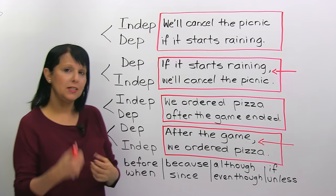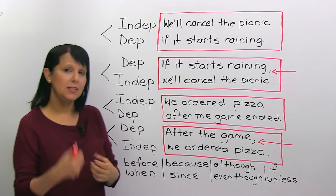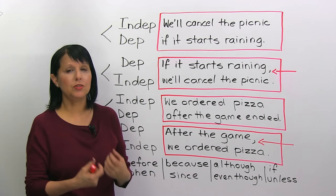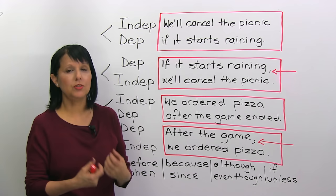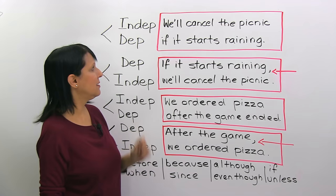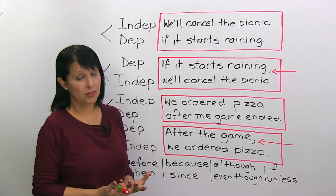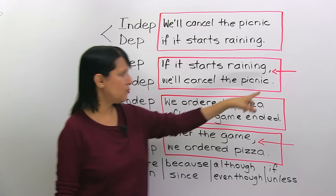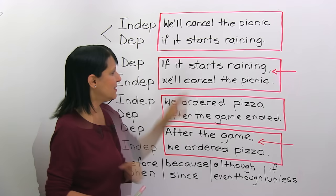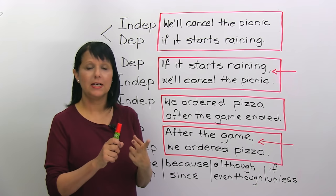Just listen when I'm actually saying it, because in real life if I was speaking these sentences out loud, I would actually pause — not because I see a comma, but because that's how we talk. 'We'll cancel the picnic if it starts raining' is one long smooth sentence. But 'If it starts raining, we'll cancel the picnic' — did you feel and hear that pause? That pause is represented by the comma.